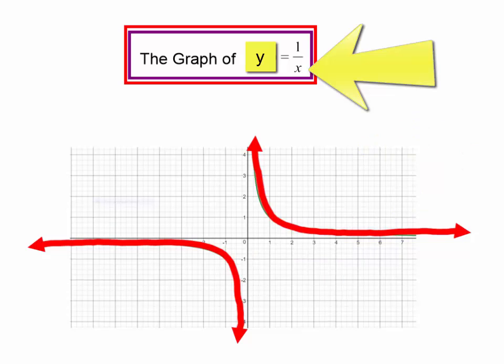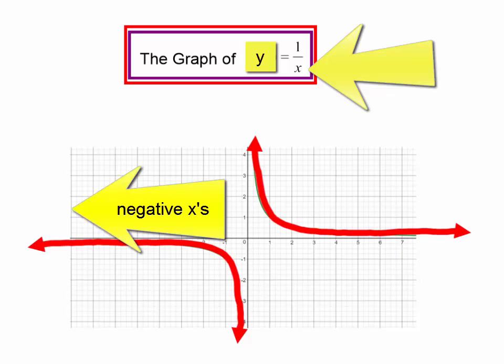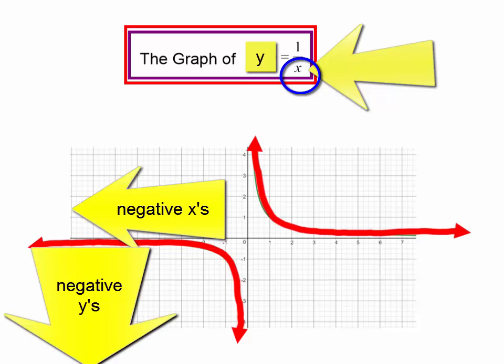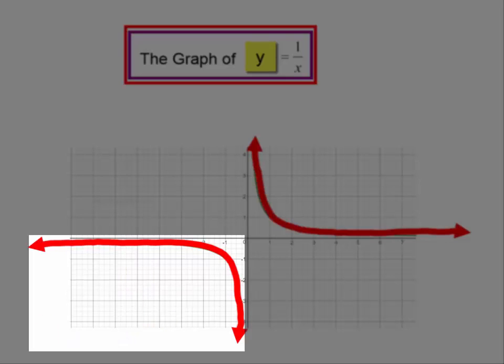If I plug in a negative value for x, I will have y equals 1 over a negative number, so y is negative. If I plug in a negative value for x, y will also be negative, which is why these points are below the x-axis.